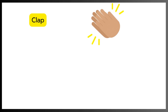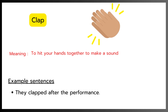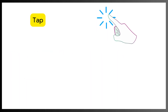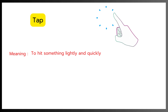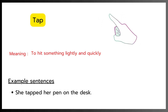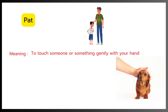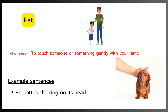Clap. Meaning: To hit your hands together to make a sound. Example: They clapped after the performance. Tap. Meaning: To hit something lightly and quickly. Example: She tapped her pen on the desk. Pat. Meaning: To touch someone or something gently with your hand. Example: He patted the dog on its head.